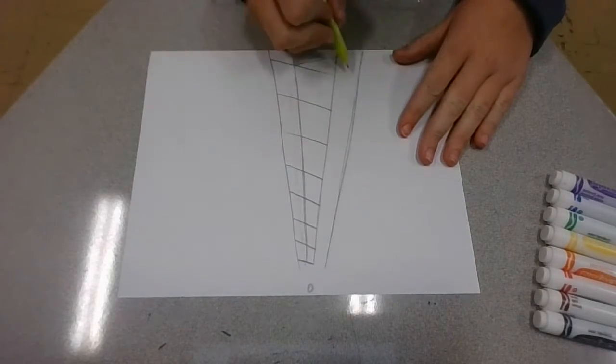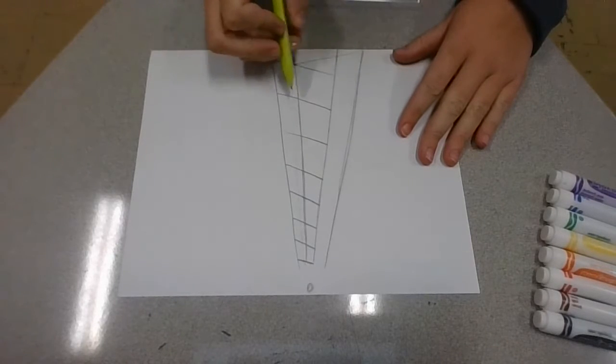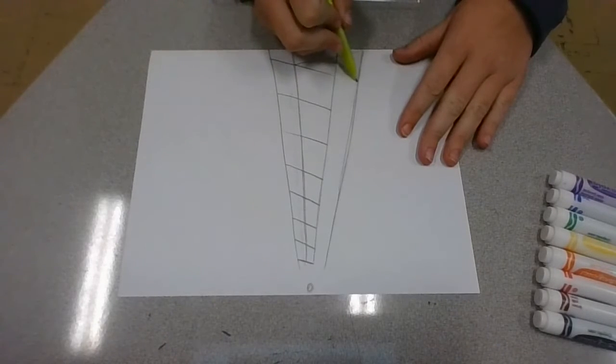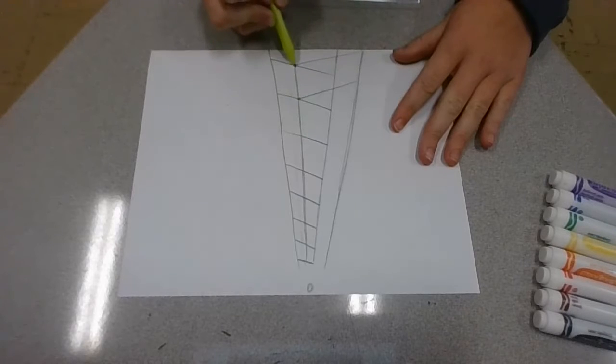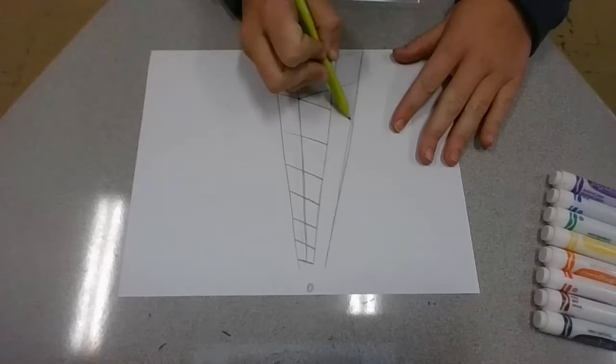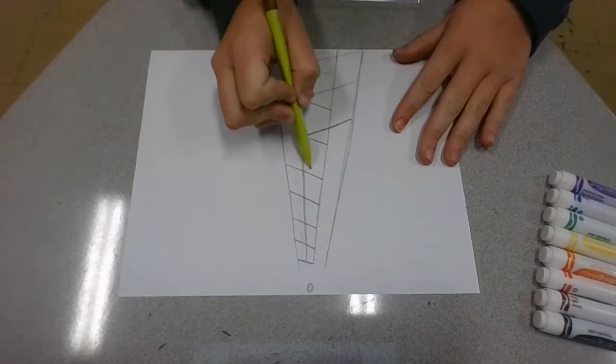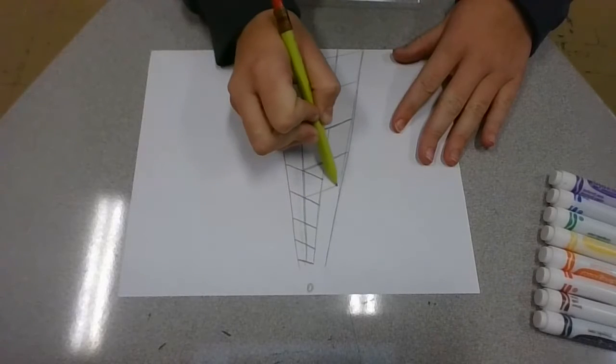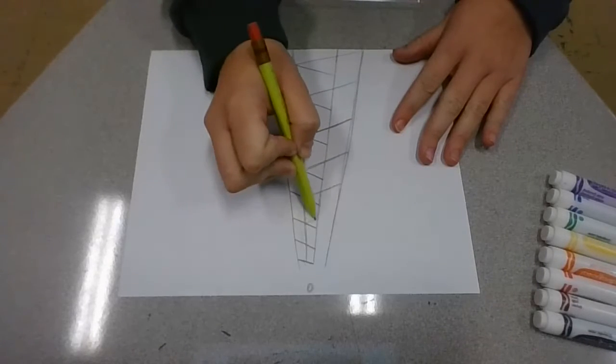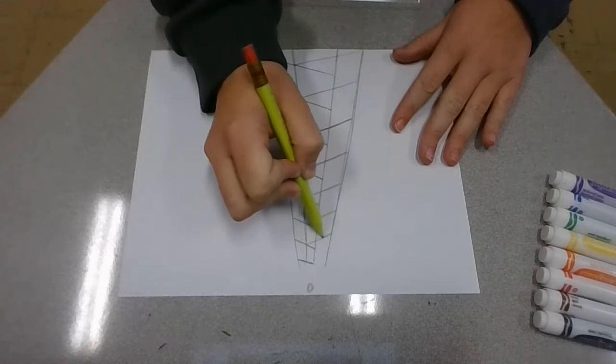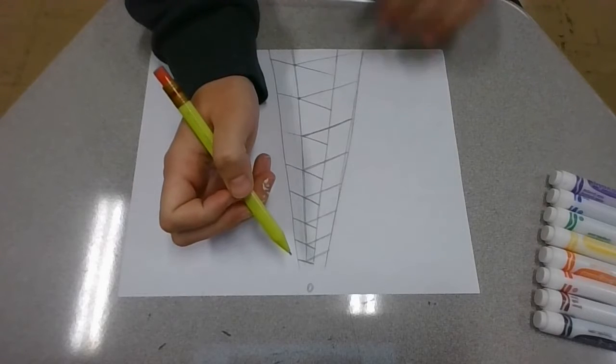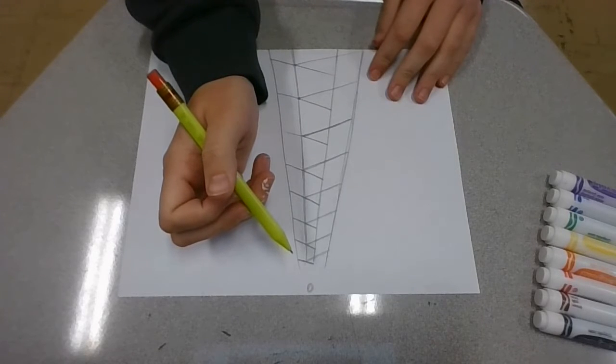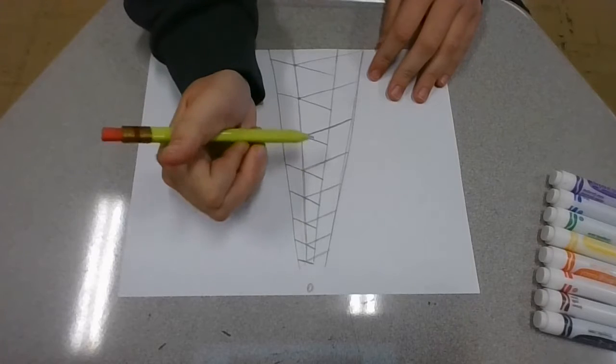And so now what we're going to do is we're going to come back and we're going to intersect from the other side. So we're going to angle over to that line. And remember, it's almost like a dot right here where it touches. So right now, mine is done with my lines here.